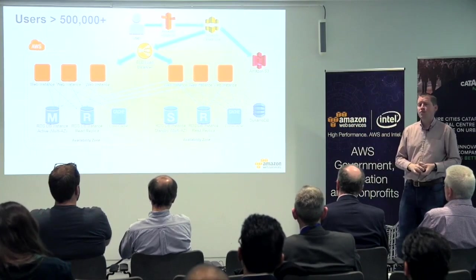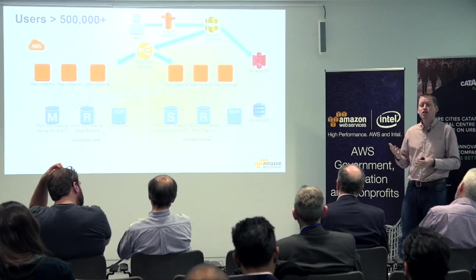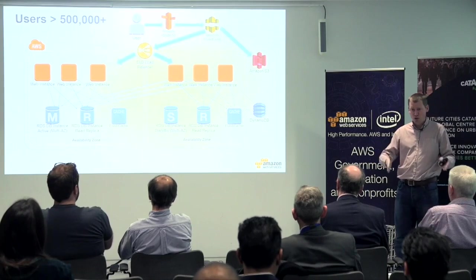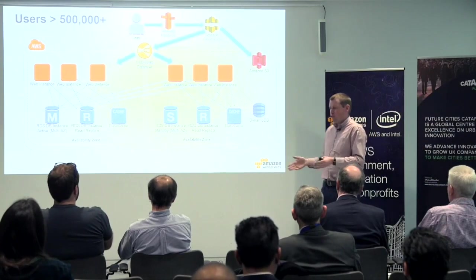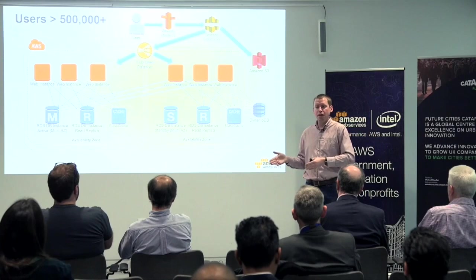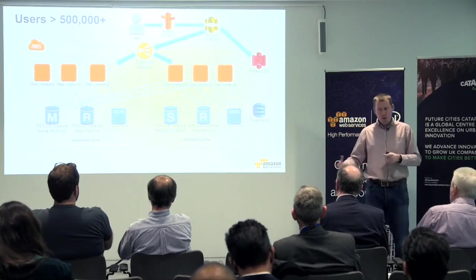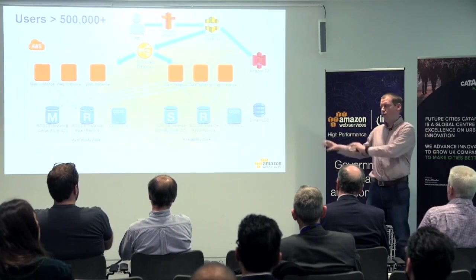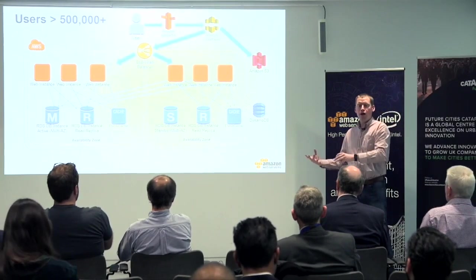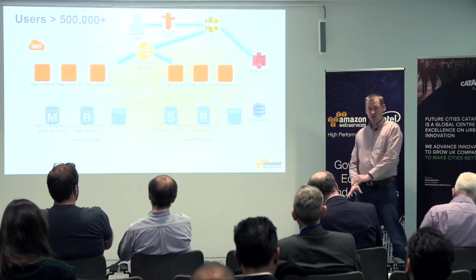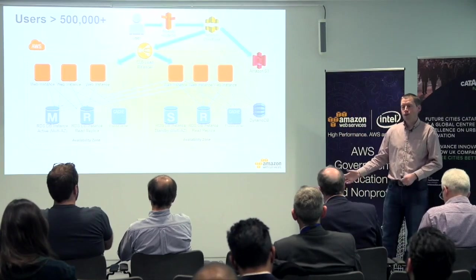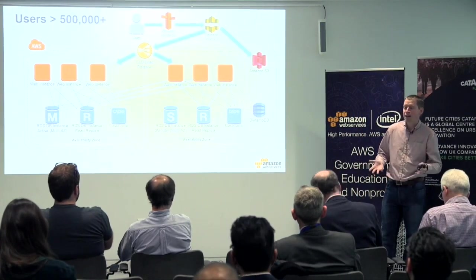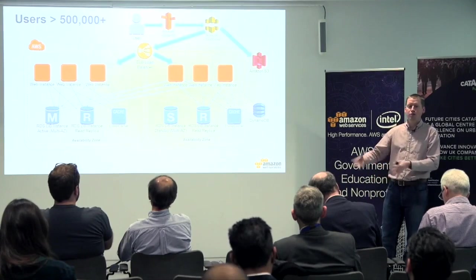It's also great for test and dev. Many organisations want a development or system test environment that's a replica of live. In a traditional on-premises environment, most of the time it's sat around doing nothing — you need it for maybe 10 to 20% of the time. Within AWS, you automate the deployment of your live environment, take an exact copy, deploy it in development, run it for a few hours, do your test and dev, and then turn it off. Once it's off, you don't pay anything. Properly managed, you can reduce your dev cost by up to 80%.